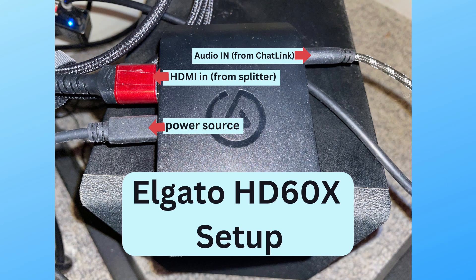Plug the Chat Link Pro into the controller audio output and make sure in the PS5 audio settings that the output is always set to 'Controller' — not headphones or anything else. It won't produce any sound in OBS unless you select controller, and you may need to do this every time you turn on the PS5. It gets annoying but it solves the problem of getting all chat audio into OBS. However it won't record you talking, which is why you need a second mic for your stream. Also note this was not a problem on PS4 but for PS5 streaming you need the Chat Link Pro.